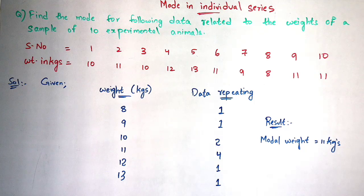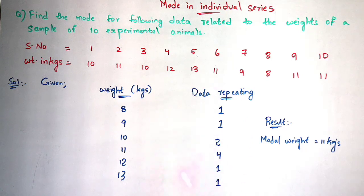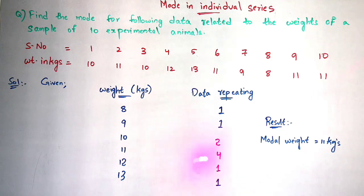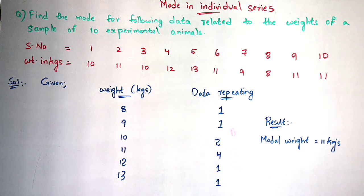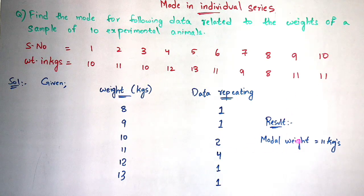Now, how will the mode value be known? If you see in the data repeating column, there are 6 numbers: 1, 2, 3, 4, 5, 6. Within these 6 numbers, 4 is the highest number. The weight corresponding to this highest data repeating number is 11. So 11 will be the answer - the modal weight will be 11 kg. Writing the result is very important, and the result depends upon the question and data presented.